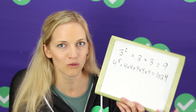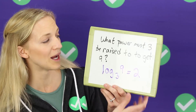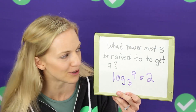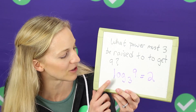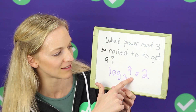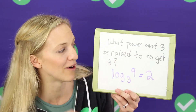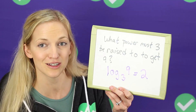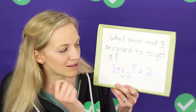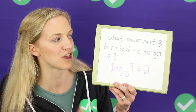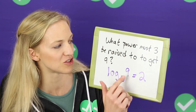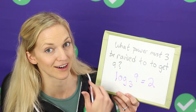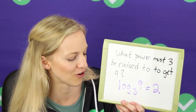The way logarithms work with exponents is a logarithm answers this question: what power must three be raised to to get nine? And it would look like this — log base three of nine. We already answered this question. What power must three be raised to to get nine? That's two. Three squared, three to the two, is nine. So you always want to be thinking about that question: what power must a number be raised to to get this answer? And that's the order it's written in a logarithm.